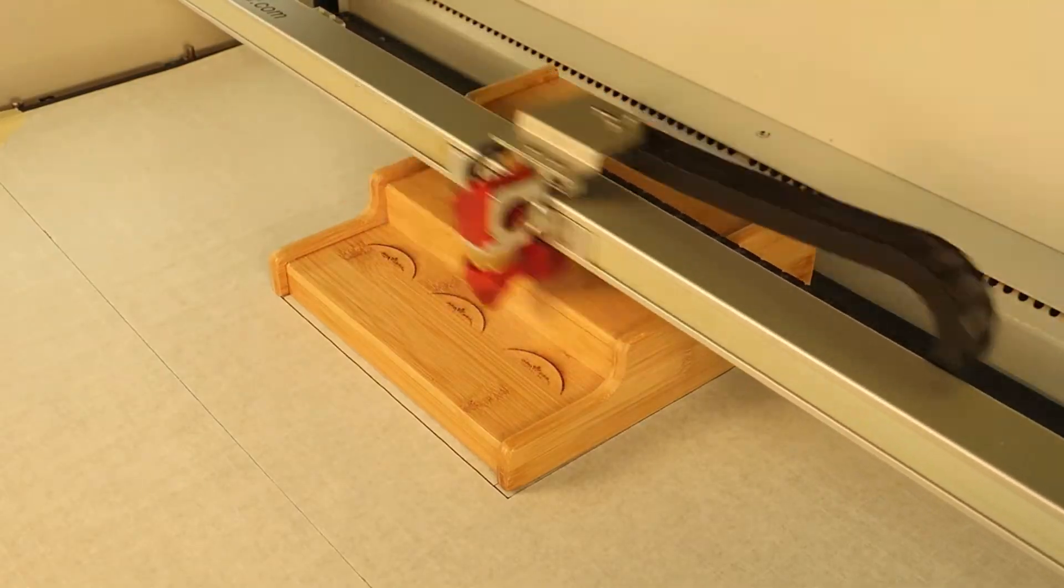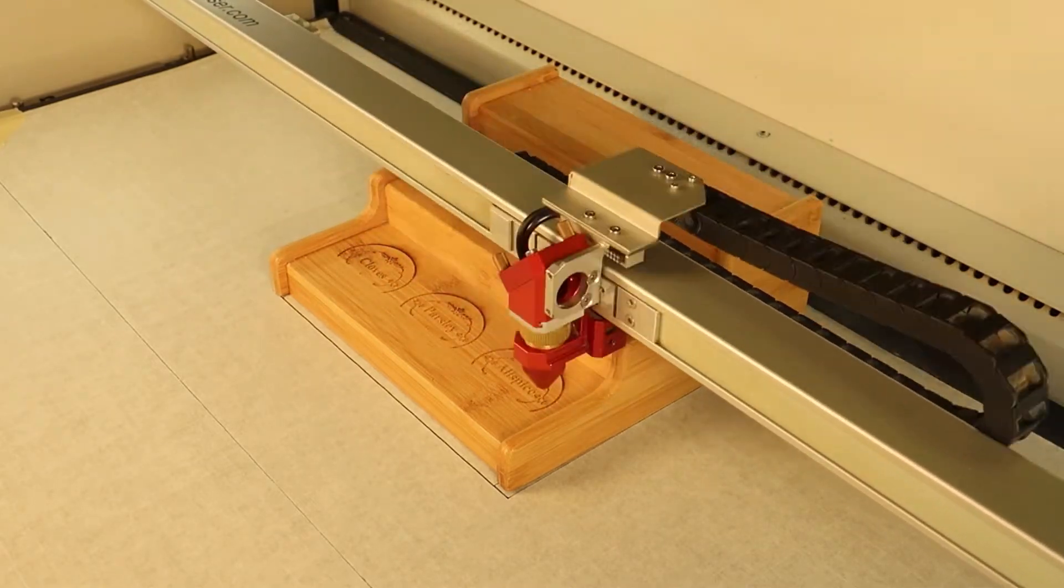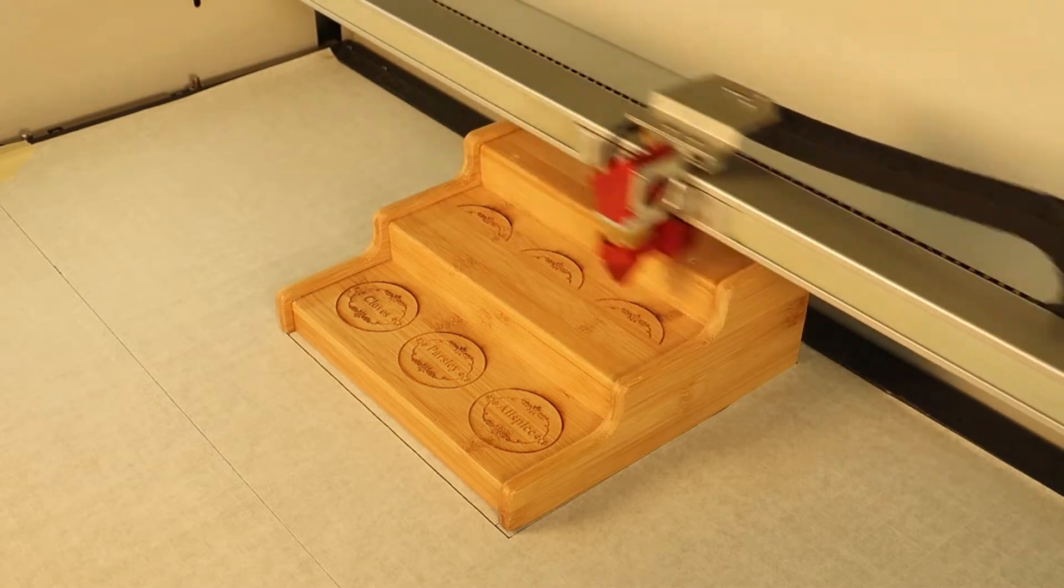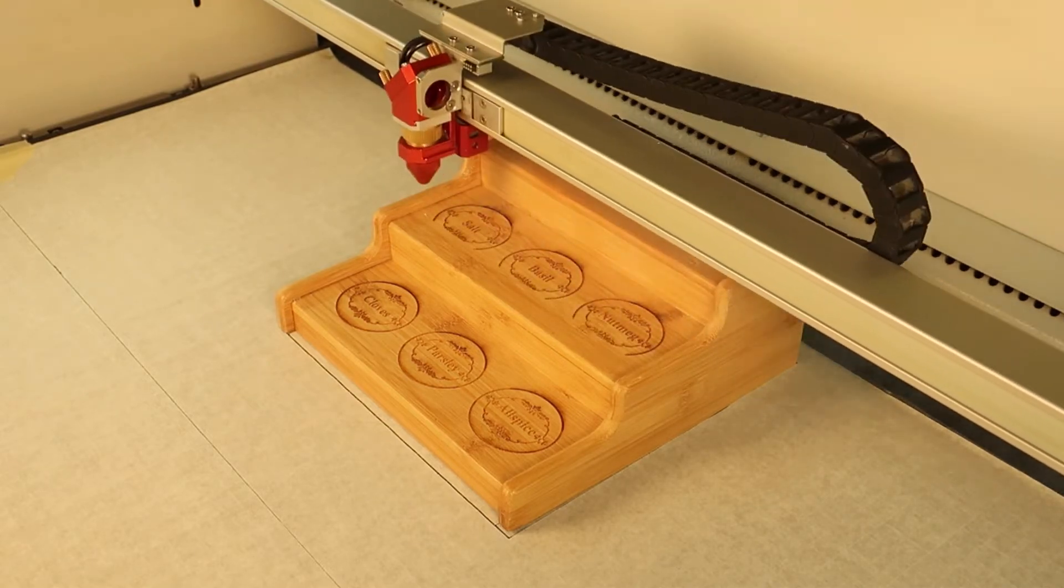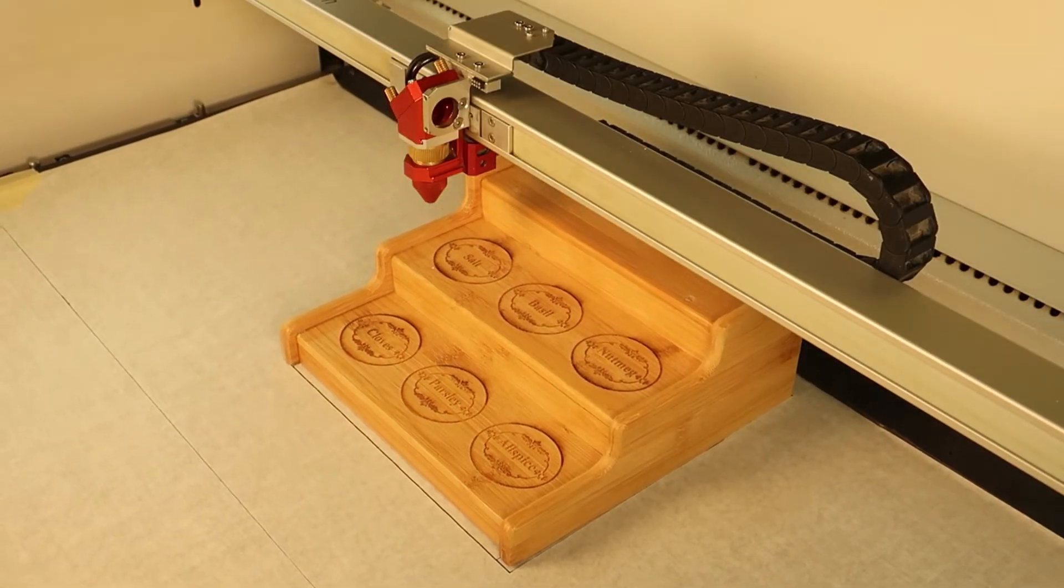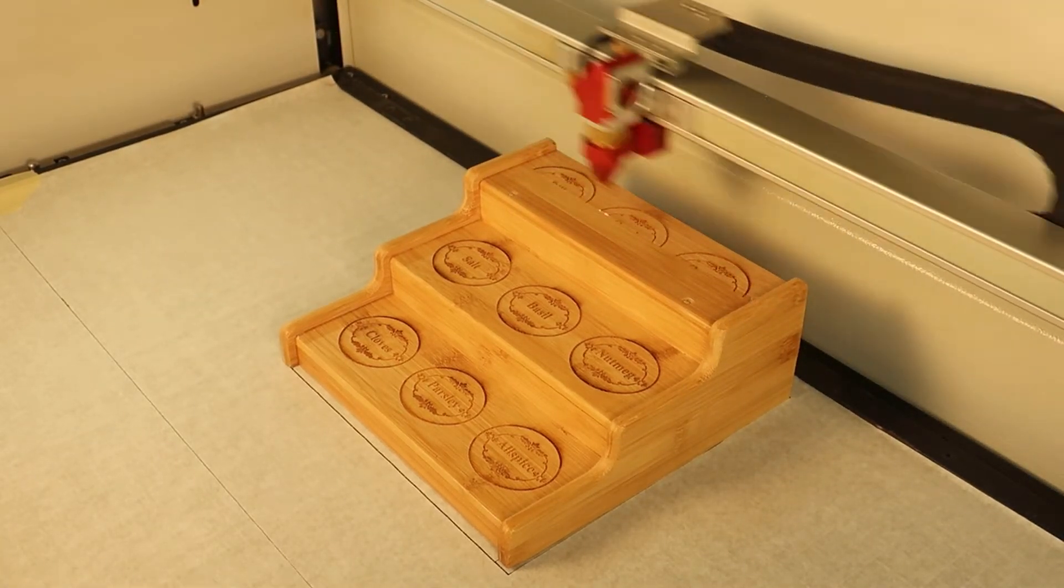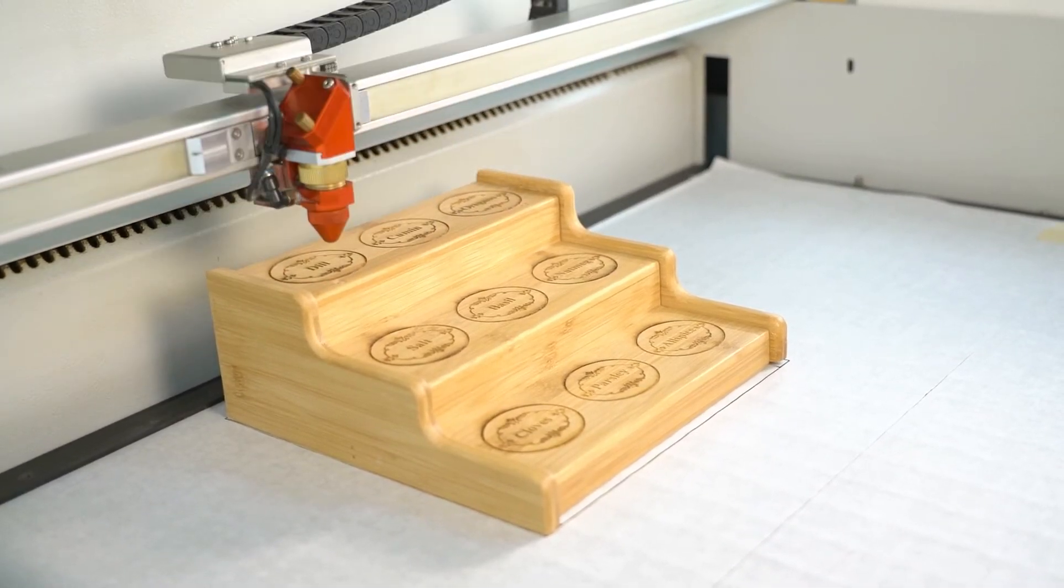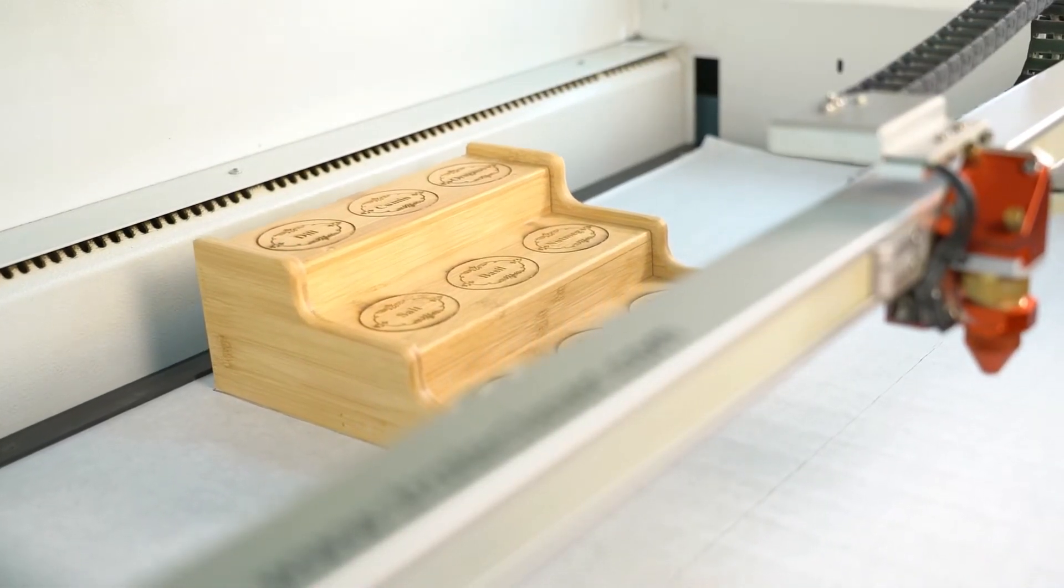Once everything is set up then go ahead and start the job. The laser will process each color in order of the color palette then move to the second color used changing the focus that was assigned for each color. After the third color is complete it will then move to the fourth color moving the laser head out of the way and making sure it is clear of the product.